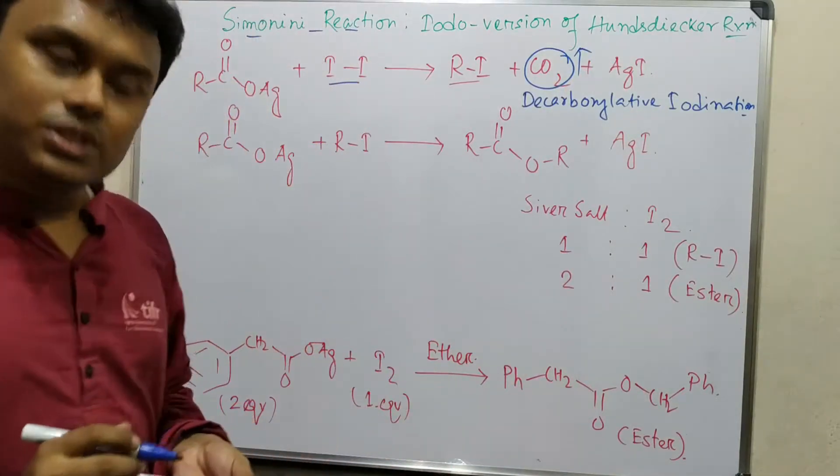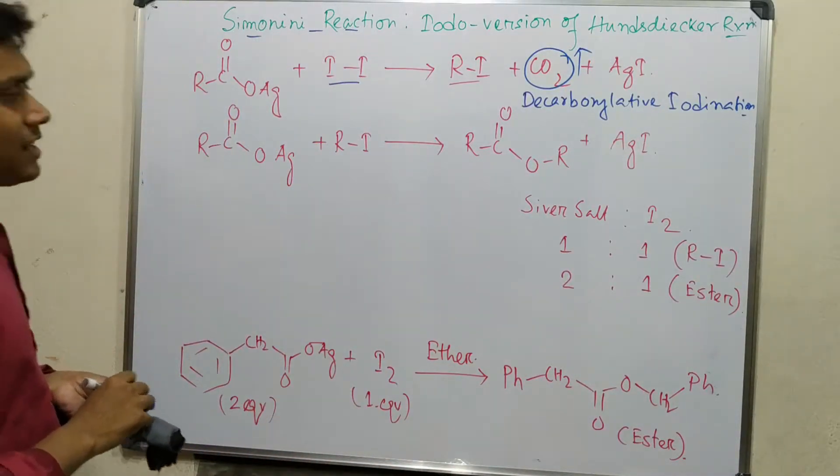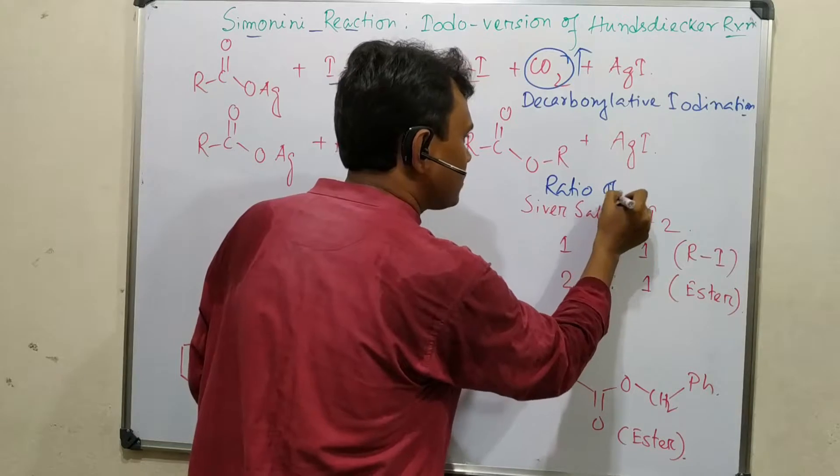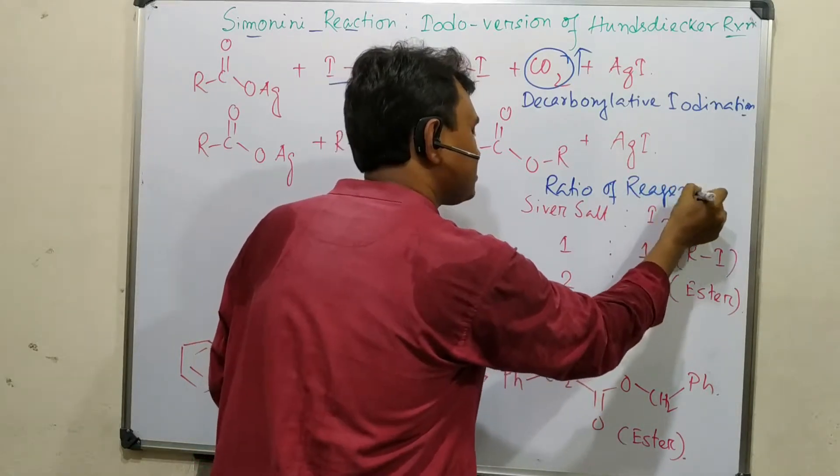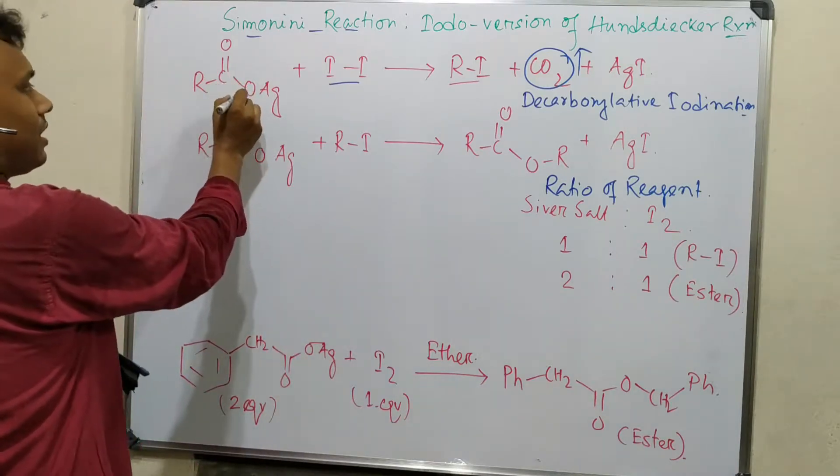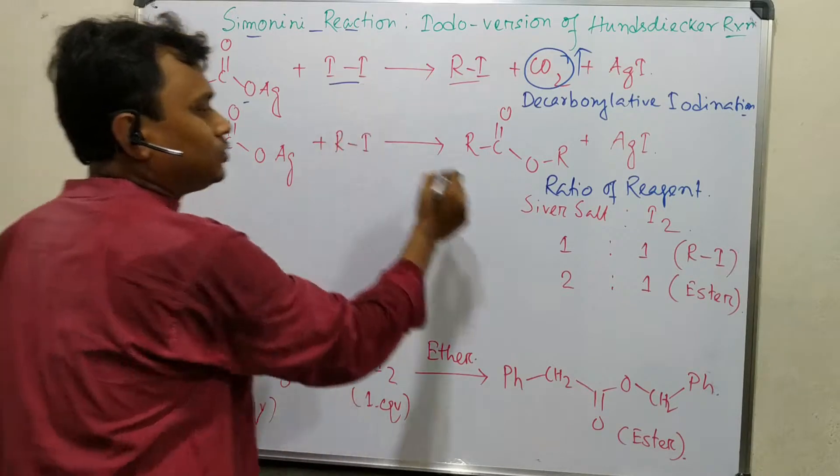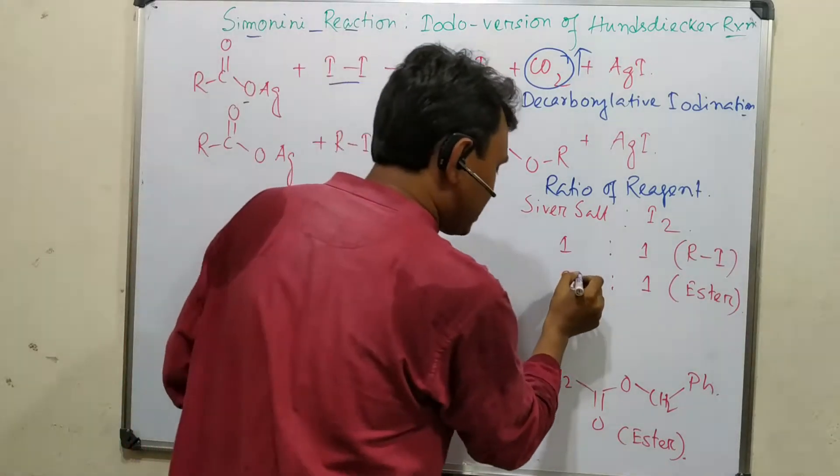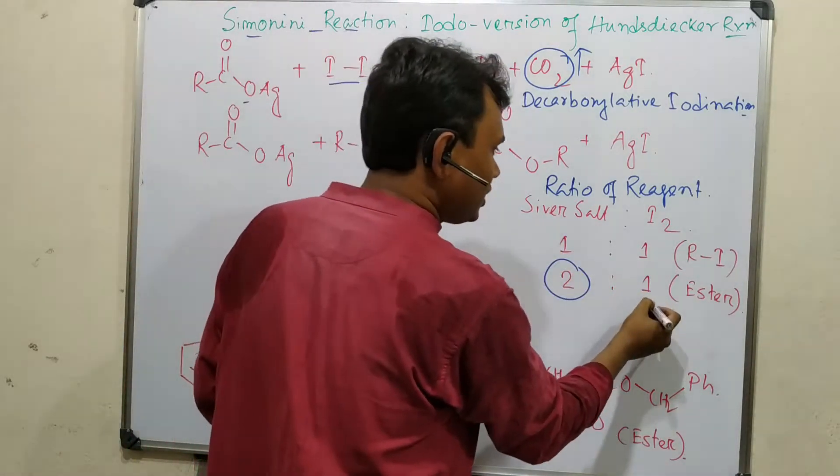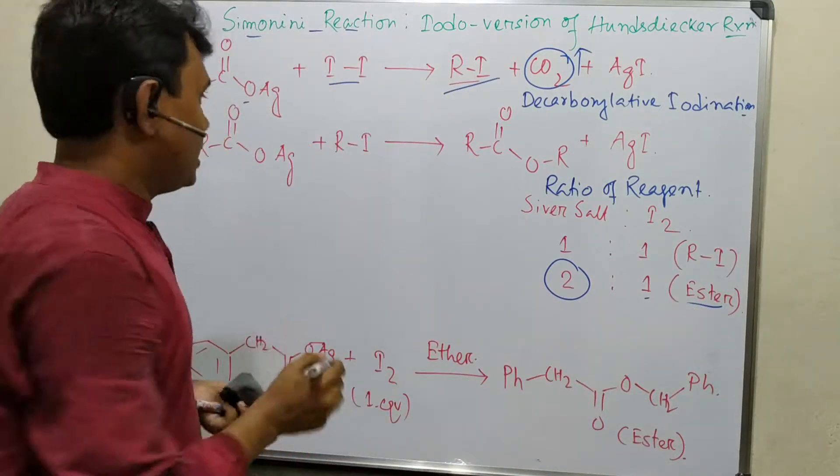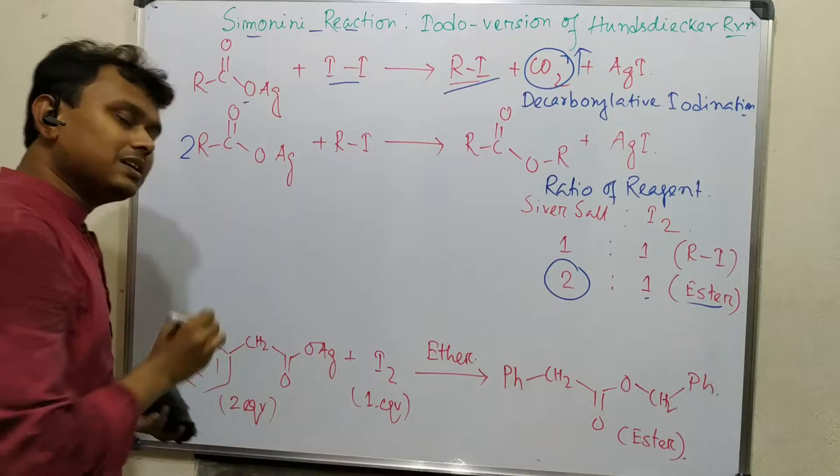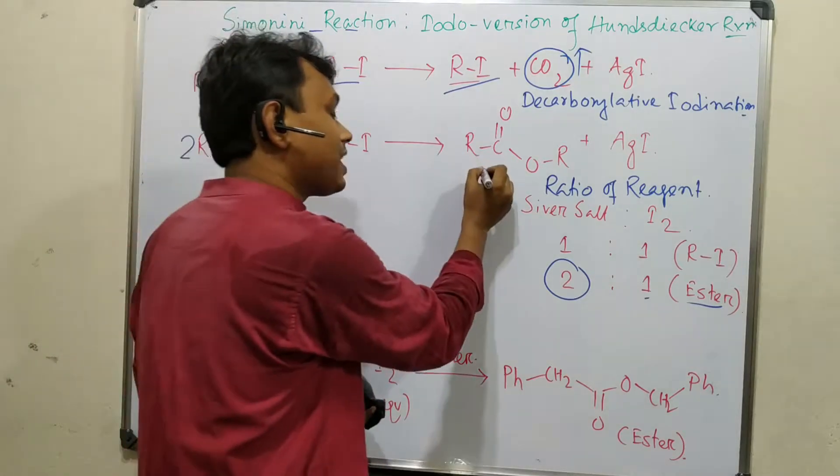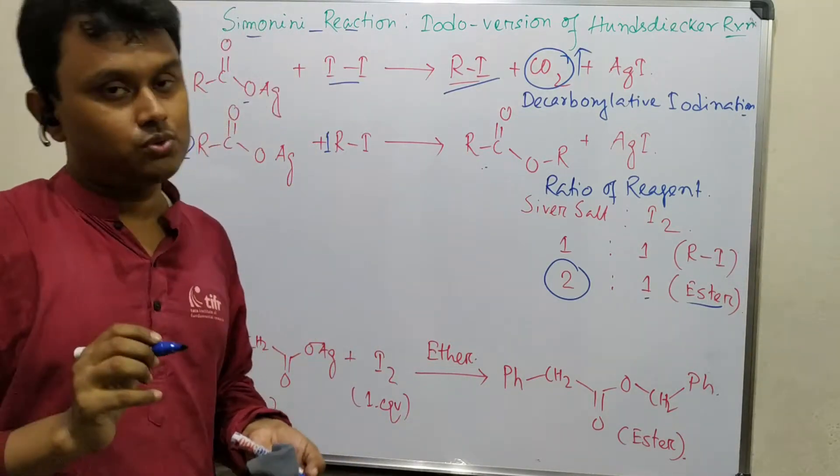One interesting factor is the ratio dependence of reagents. If you take this silver salt of carboxylic acid and iodine in a 1:1 ratio, it will ultimately result in R-I. But interestingly, if you take two equivalents of silver salt and one equivalent of iodine, it will produce ester. So this is the difference between these two reactions.